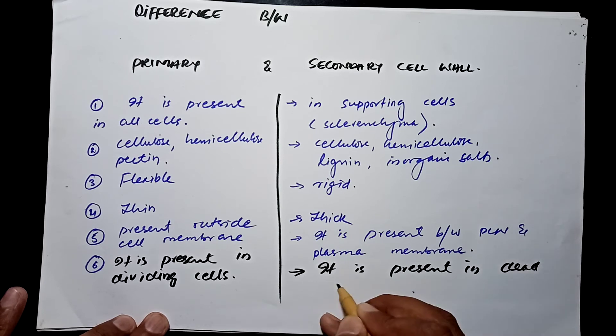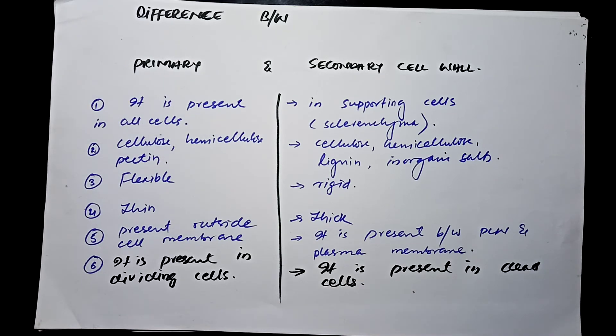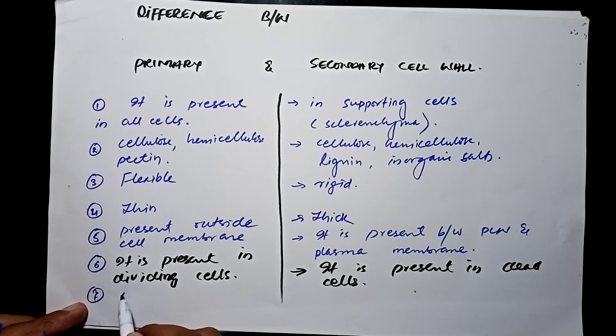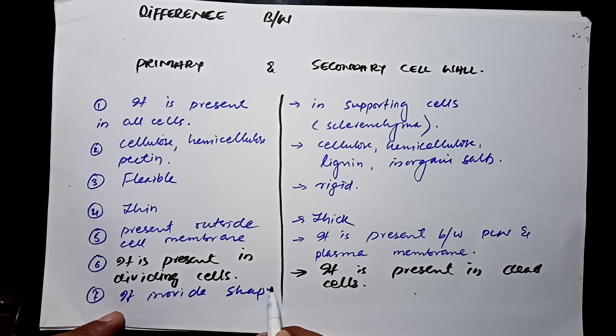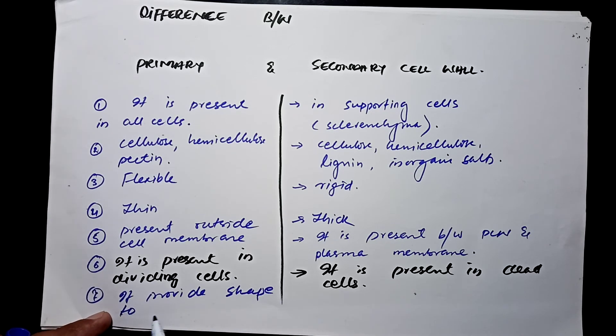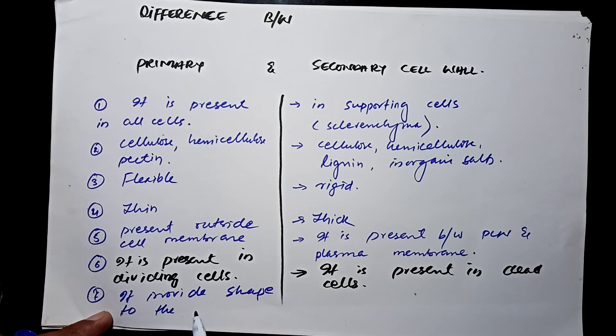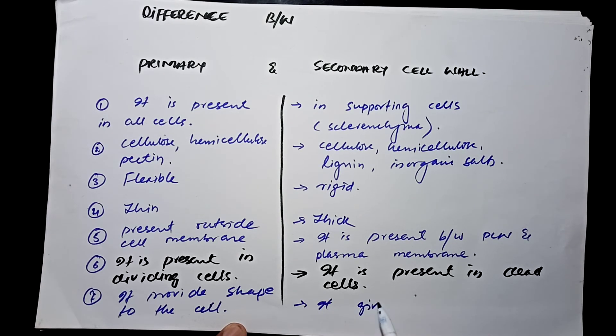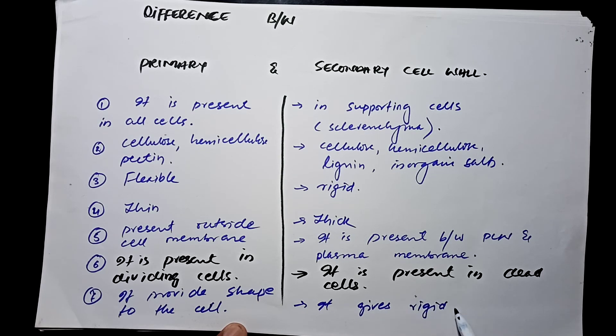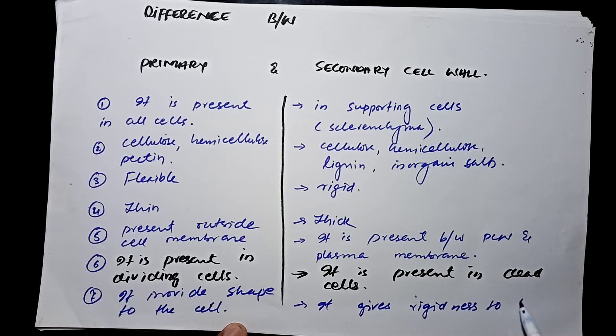So these are the differences between primary and secondary cell wall. Primary cell wall gives, again provides shape, it is a function of the primary cell wall. It provides shape to the cell. Cell, it gives rigidness to the cell.